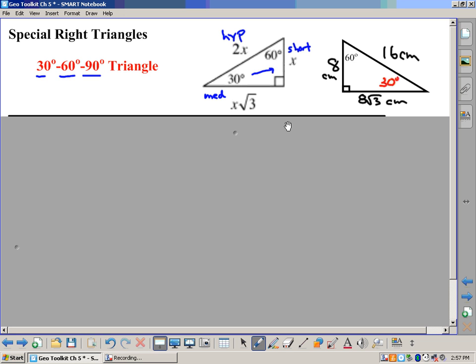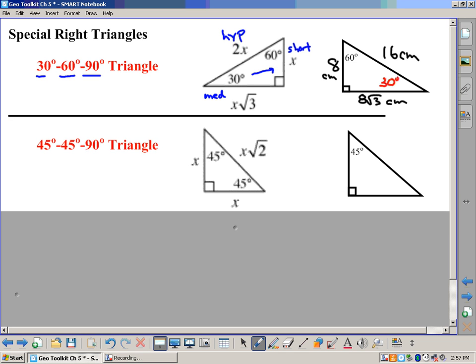That's always the relationship between the three sides. The other kind of special right triangle we have is what we call the 45-45-90 triangle. And so if it's a 45-45-90, we know that the two legs are going to be the same because they're opposite the same angles here. So these sides must be congruent.